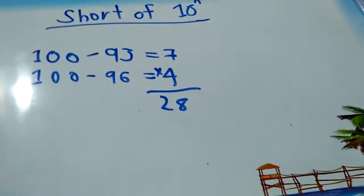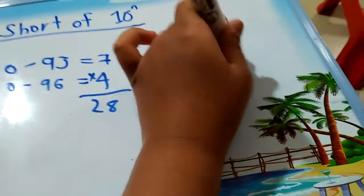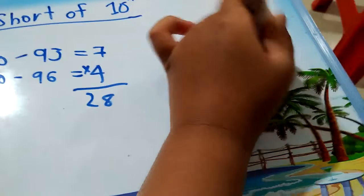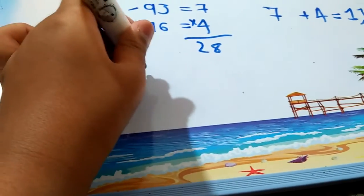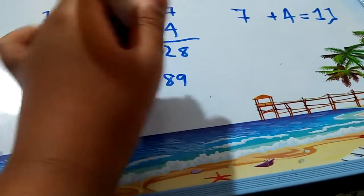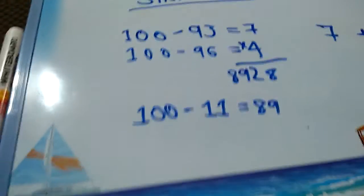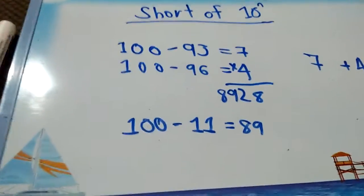And add both of them to get 11, then subtract 11 from 100 and you will get 89. Put this 89 next to the 28, the product is therefore 8928. This is my way of doing short of 10 to the n.